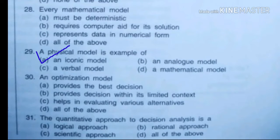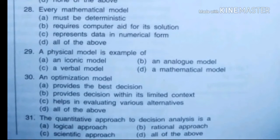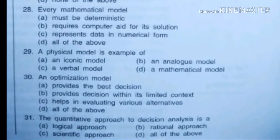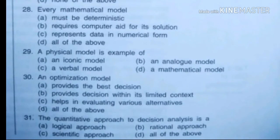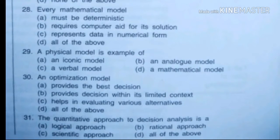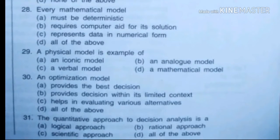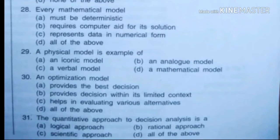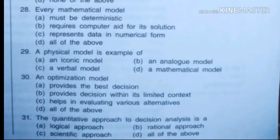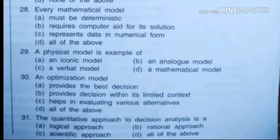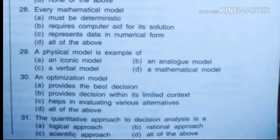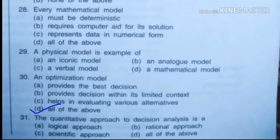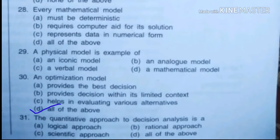An optimization model, number 30. The optimization model provides the best decision, provides decision within limited context, C helps in evaluating various alternatives, D is all of the above. Right answer is D, all of the above.